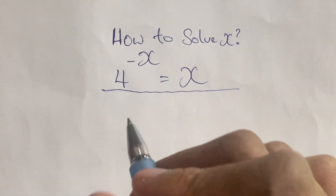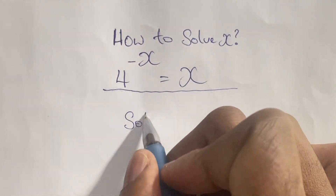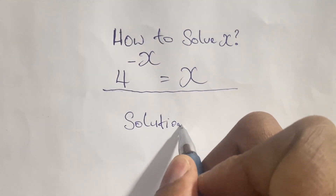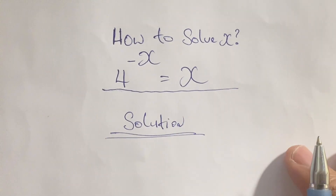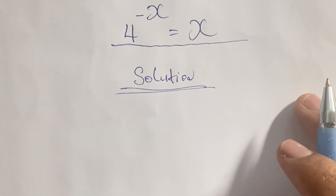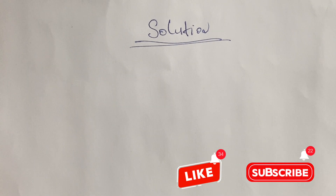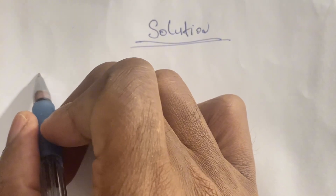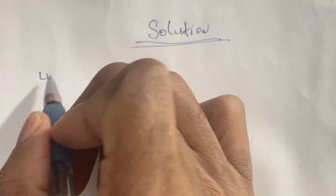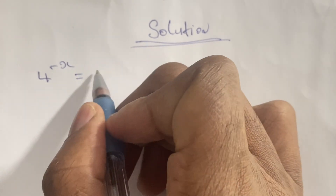You may want to pause this video and see if you can do this one by yourself. You may also check out my playlist on how to solve mathematical equations like these ones. Okay, let us look at our solution. We have an equation such as 4 to the power of negative x and this is equal to x.